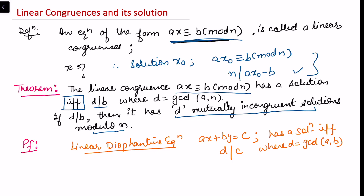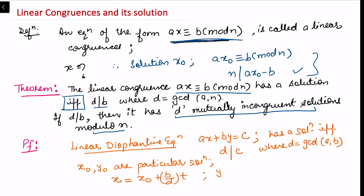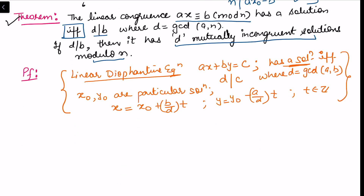If x₀ and y₀ are particular solutions, then all other solutions are given by x = x₀ + (b/d)·t and y = y₀ − (a/d)·t. I have already proved this — the link for the detailed proof of the Diophantine equation is in the description. Now I will use this theorem to prove the current theorem.